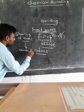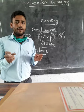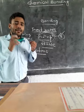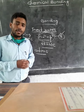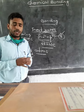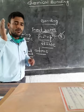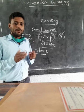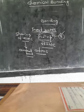So we have two main types of bonds: the ionic bond and the covalent bond. These are the two types of chemical bonds we have discussed today. Thank you.